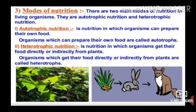Heterotrophic Nutrition: Hetero means other; trophic means nutrient. Some organisms depend on other organisms, plants or animals, for their food. This is called heterotrophic nutrition. Organisms which get their food directly or indirectly from plants are called heterotrophs.